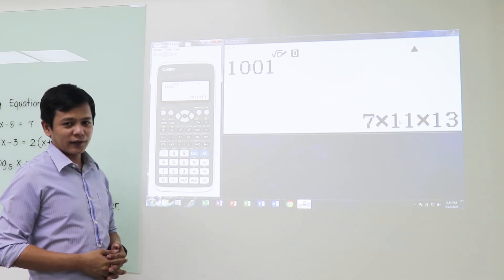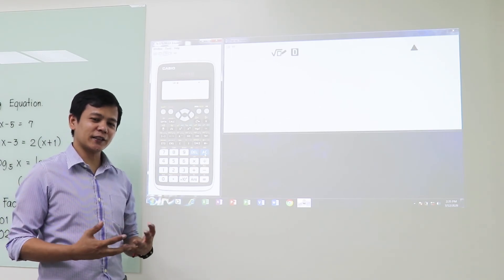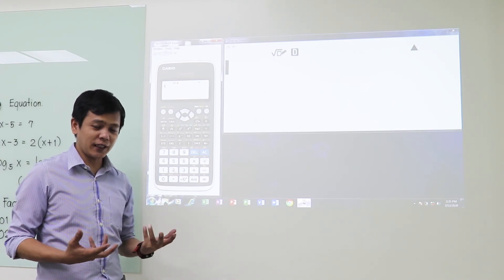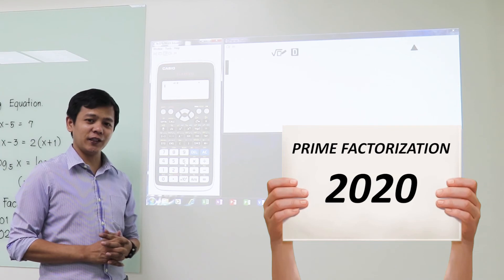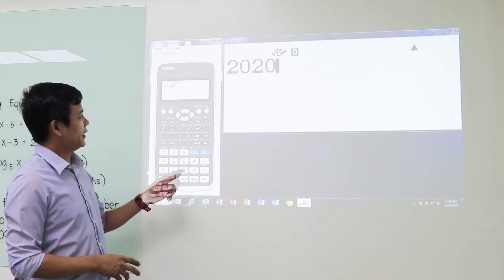Another example: since this year is 2020, let us see the prime factorization of the year 2020. So press 2020 again, then equals, and then shift factorize. So that's the prime factorization of 2020.